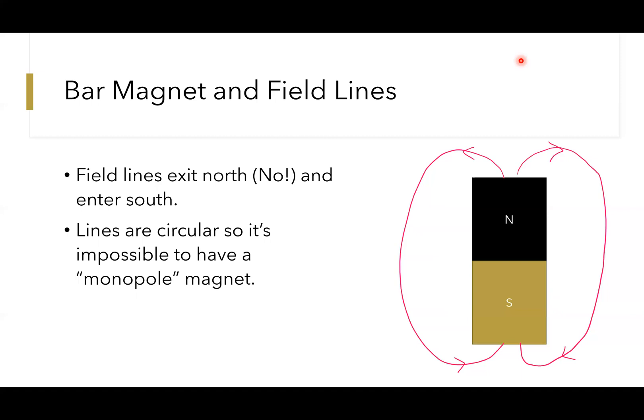They're a closed loop, so it's impossible to have what we call a monopole magnet, which is either a completely isolated north pole or south pole, because then where would the field lines go? They need to end, they need to close in a loop.